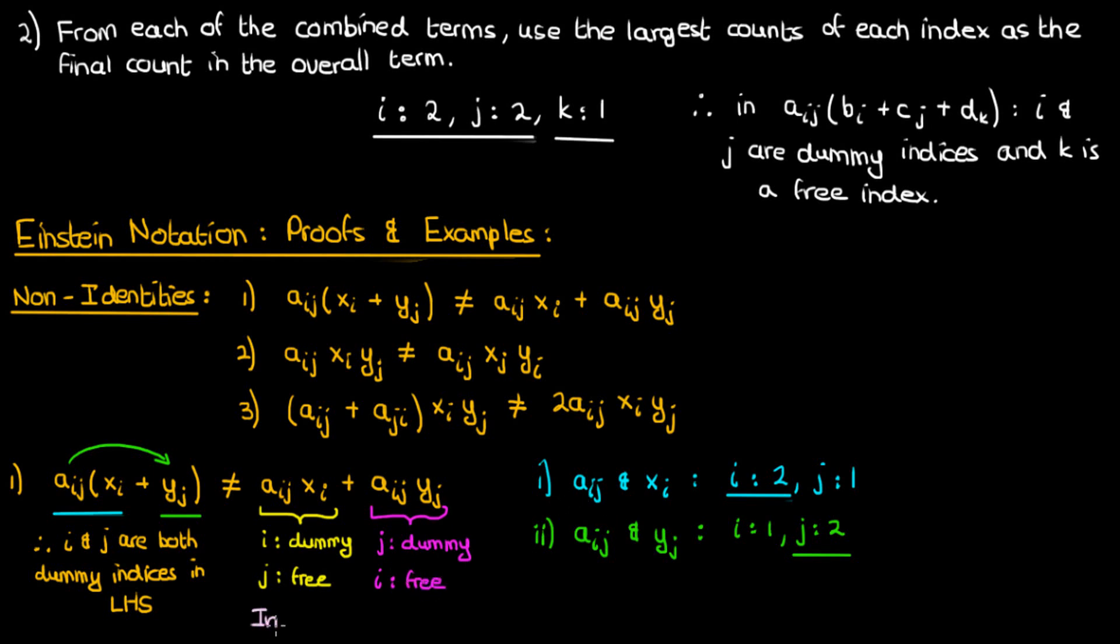This is actually inconsistent with the left-hand side where both i and j are dummy indices together, so it makes sense that this would be a non-identity.